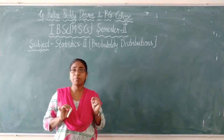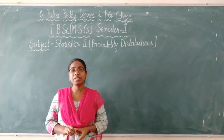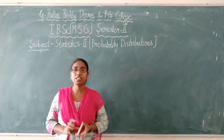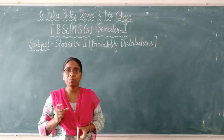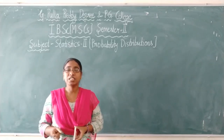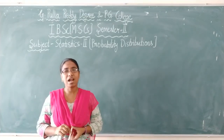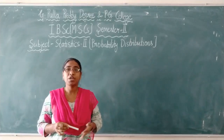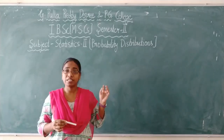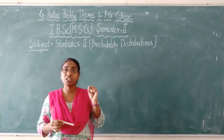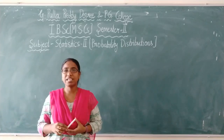We studied a little about probability distributions in the last semester, in our third unit of the first semester. That unit covered random variables. A random variable is a real function defined on each and every outcome of the sample space of a random experiment. For a random experiment, you will have a sample space — that is the set of all possible outcomes.